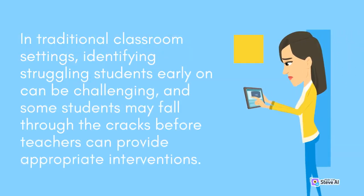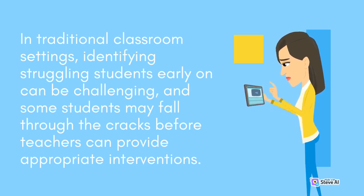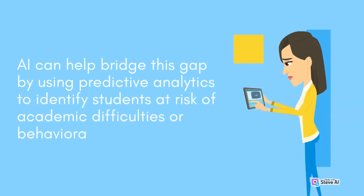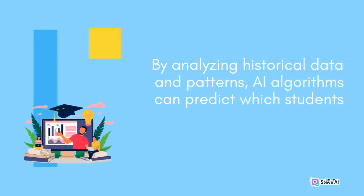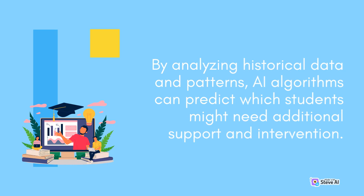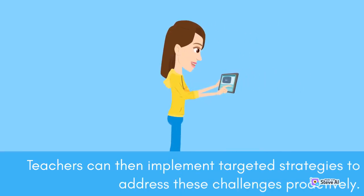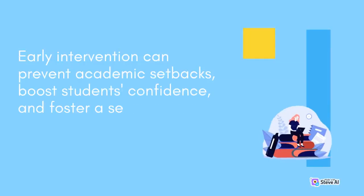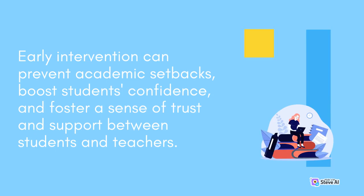In traditional classroom settings, identifying struggling students early on can be challenging, and some students may fall through the cracks before teachers can provide appropriate interventions. AI can help bridge this gap by using predictive analytics to identify students at risk of academic difficulties or behavioral issues. By analyzing historical data and patterns, AI algorithms can predict which students might need additional support. Early intervention can prevent academic setbacks, boost students' confidence, and foster a sense of trust and support between students and teachers.